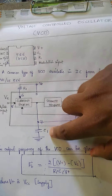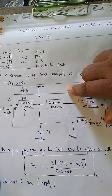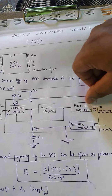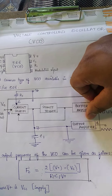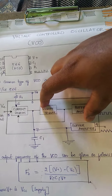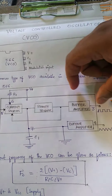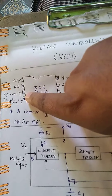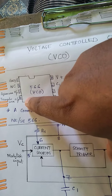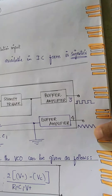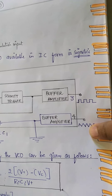The modulation input is given at pin number 5. Pin number 8 provides the supply V+. From the Schmitt trigger and buffer amplifier, we obtain the clock signal, which is the square wave output.